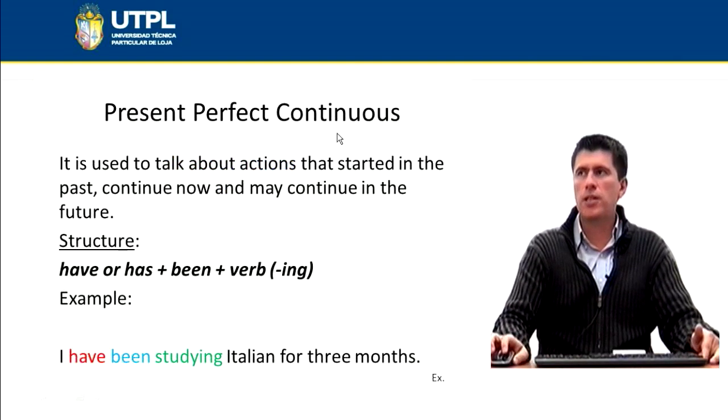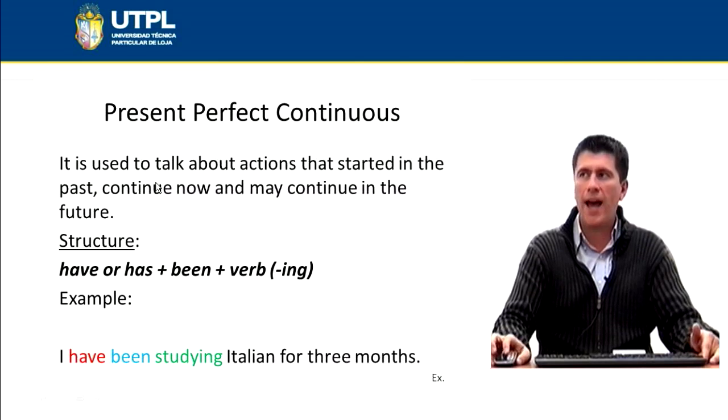The present perfect continuous. Well, the present perfect continuous is used to talk about actions that have started in the past and continue now or may continue in the future. And the structure is have or has plus been plus the verb with -ing.